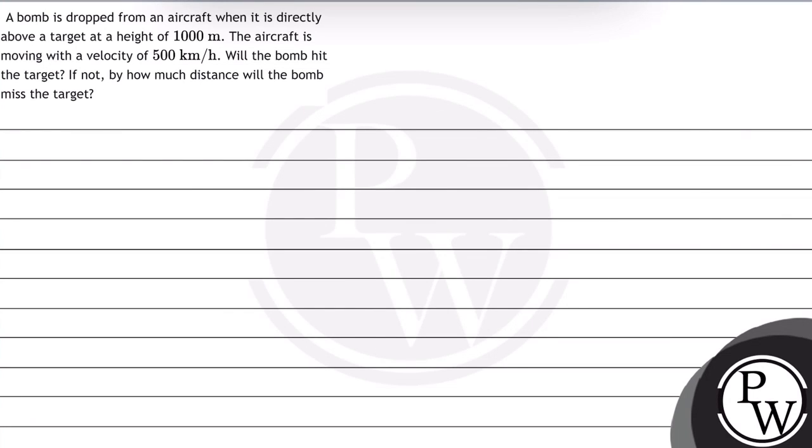Hello, let's read this question. The question says a bomb is dropped from an aircraft when it is directly above a target at a height of 1000 meters. The aircraft is moving with a velocity of 500 km per hour. Will the bomb hit the target? If not, by how much distance will the bomb miss the target?